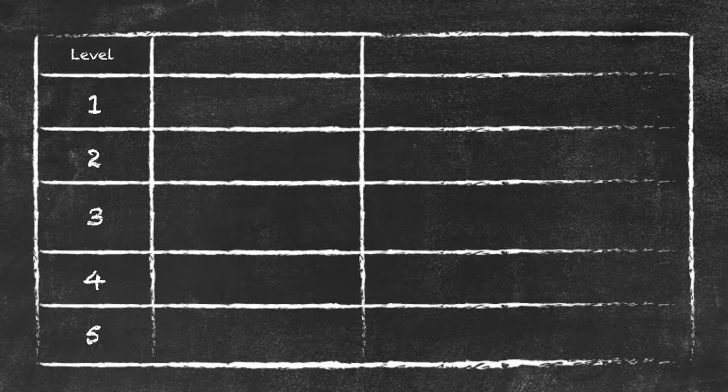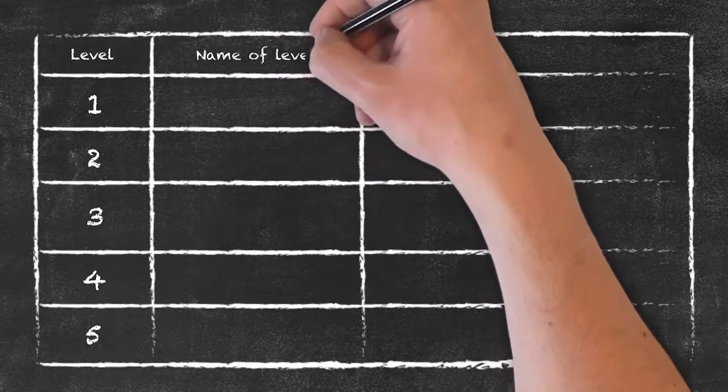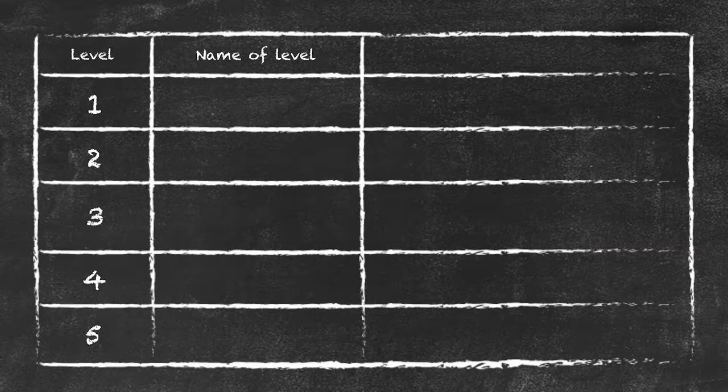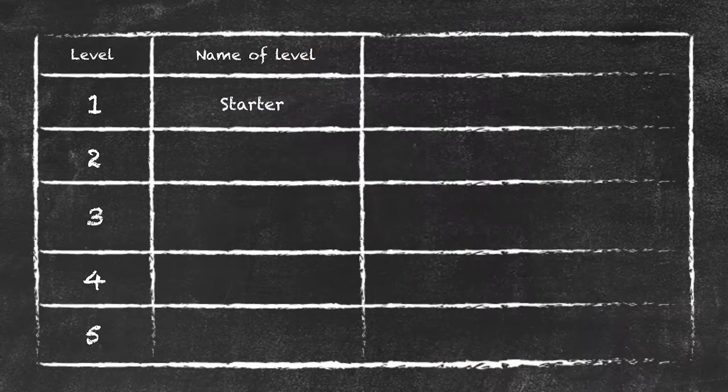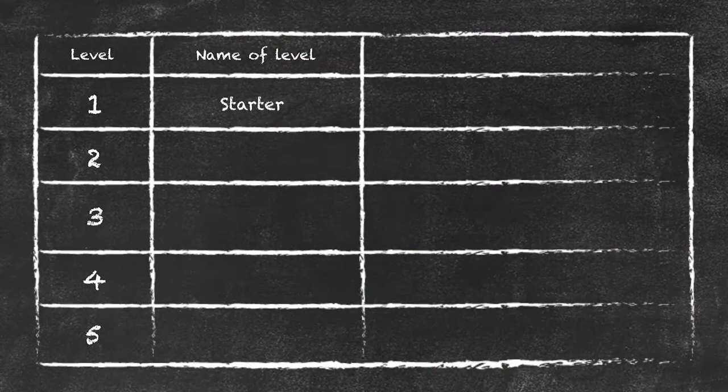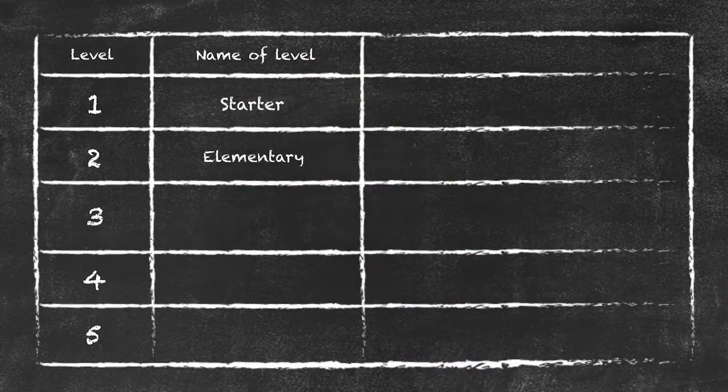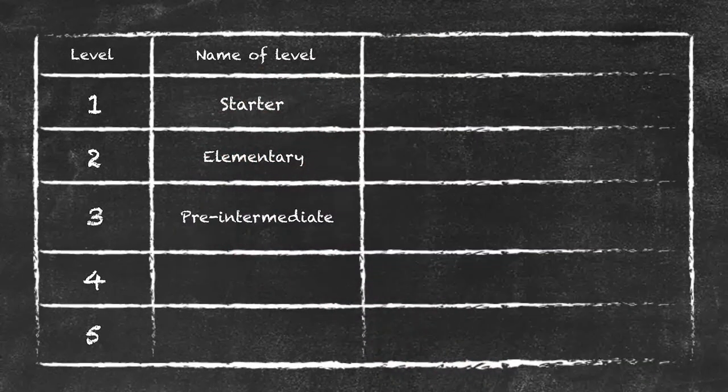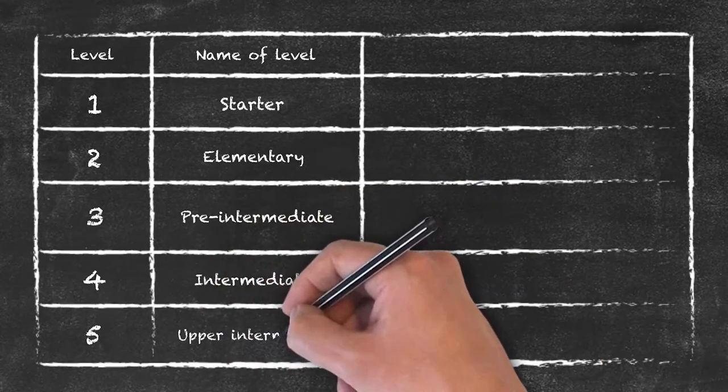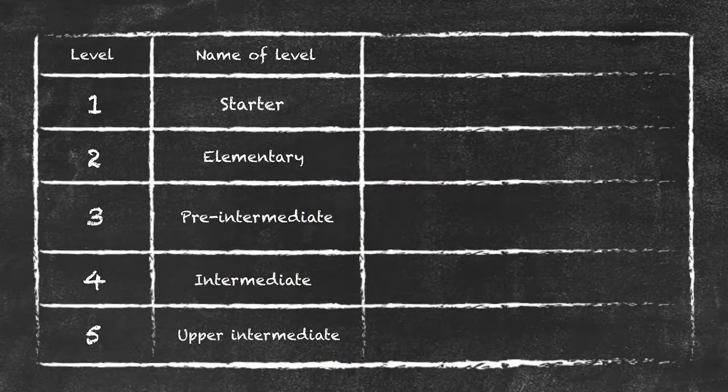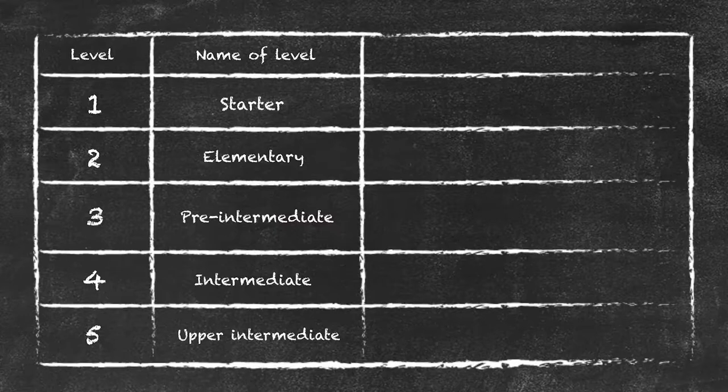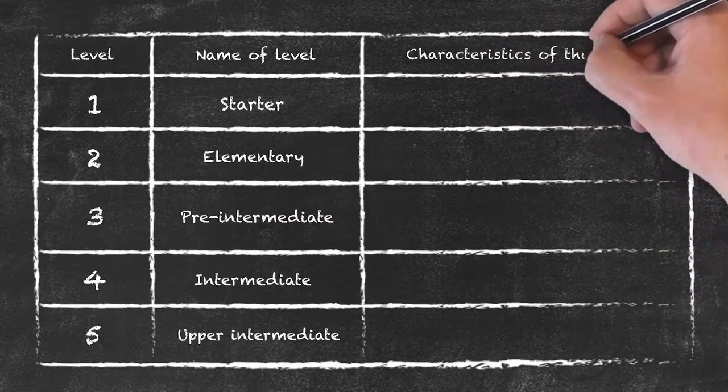Some common names that are given to these particular levels: level one, the most basic level, is called the starter group. Moving on from that, elementary, the next level beyond that, level three, the pre-intermediates, and then on to four, the intermediates, and the top level, the upper intermediates. What we can put here is some general characteristics of those learners.